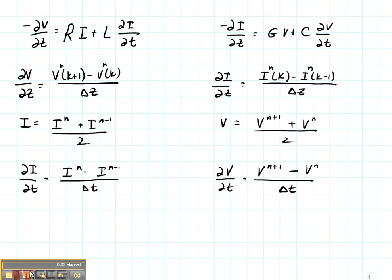Now let's talk about the final derivation that you need to do. Take these two equations and substitute in the derivatives in space, the current, and the derivative in time up into this top equation, like so. And then solve this equation for the future time, which is I of N.